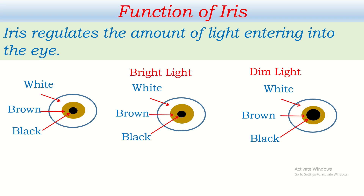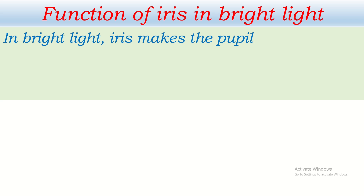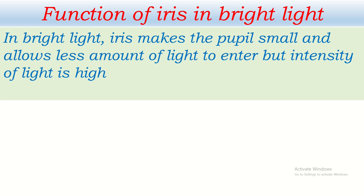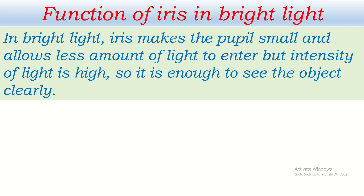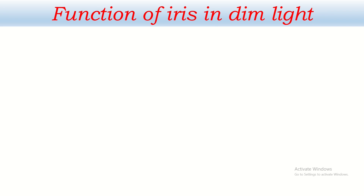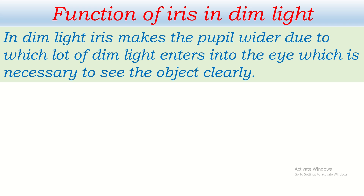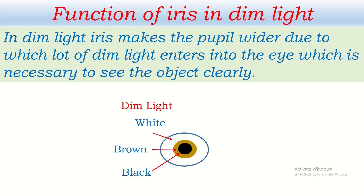In dim light, the iris makes the pupil wider, because of which a lot of dim light can enter into the eye, which is necessary to see the object clearly. So we can write: in bright light, iris makes the pupil small and allows less amount of light to enter, but intensity of light is high so it is enough to see the object clearly. In dim light, iris makes the pupil wider, due to which lot of dim light enters into the eye which is necessary to see the object clearly.